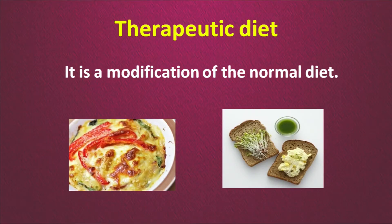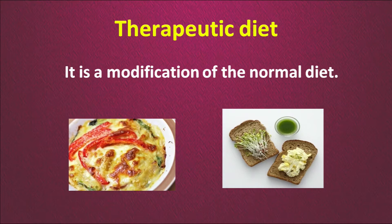In these two pictures you can see bread with a very rich coating, but when the same thing is given with certain modification — for example with sprouts and a small spread — it shows the possibility of modifying the same diet into a therapeutic diet. So a normal diet can be modified easily into a therapeutic diet.